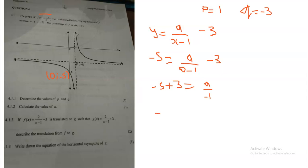Negative five plus three gives us negative two, and that equals a over negative one. I always advise you to use cross multiplication because not every question will be a over one — sometimes it will be a over a bigger number. With cross multiplication: negative one times negative two gives us two, and one times a gives us a. Therefore a equals two. That is the value of a — three marks.